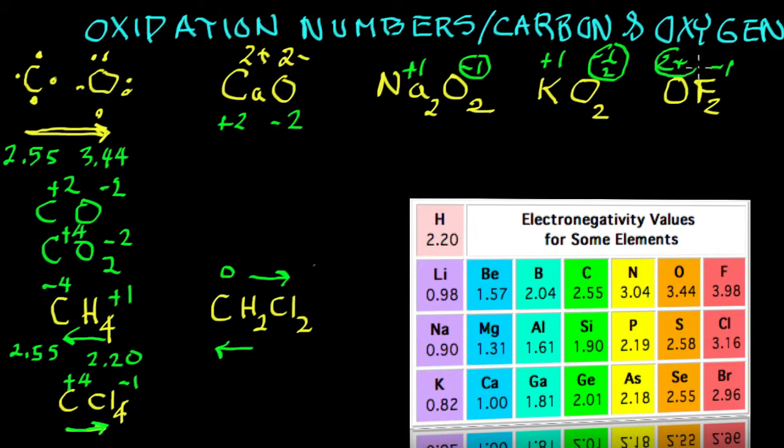So you see, I don't like rules because electronegativity is the key issue in oxidation numbers. But we had three rules we gave you way back.